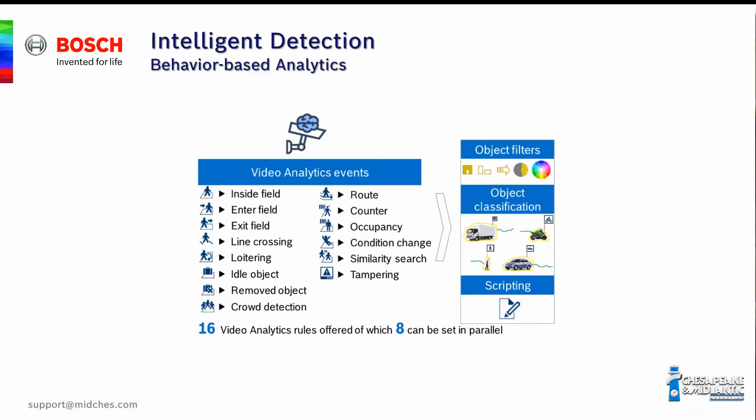We're teaching the alarm system to look for behavior detection instead of just pattern detection — we're making the system more intelligent. Besides intelligent detection, we're also enabling intelligent responses. Motion detectors are mainly useful when a structure is empty — when we arm the system. Most motion detectors are programmed not to respond at all when the system is disarmed, because the only options with a traditional burglar alarm are to call the police and set off sirens.